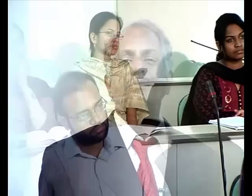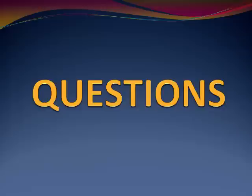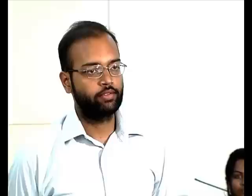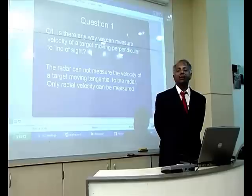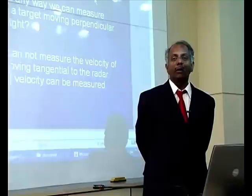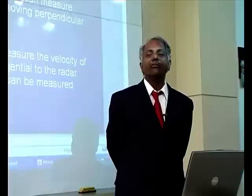Q&A: Is there any way to measure the velocity of a target moving perpendicular to the line of sight? If the target is approaching or moving away along the same line, velocity can be measured. If moving at an angle, the component along the line of sight can be found. But if the target is moving tangentially, velocity cannot be measured using a radar system.